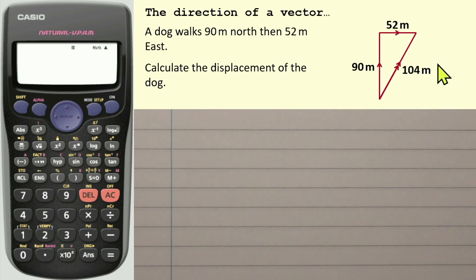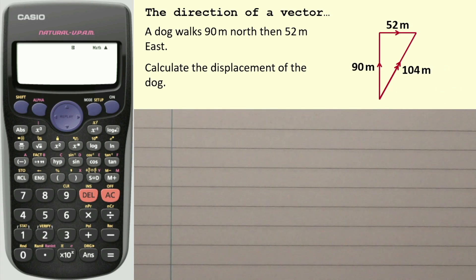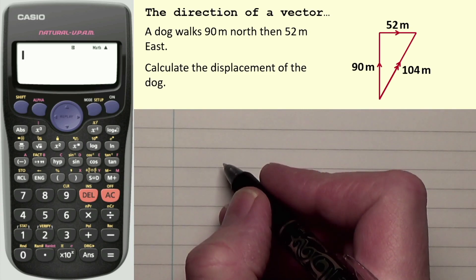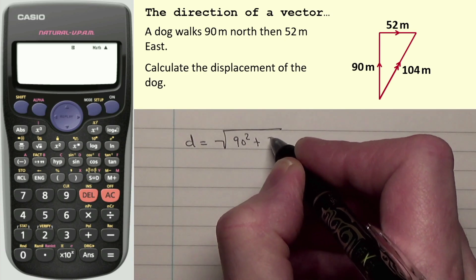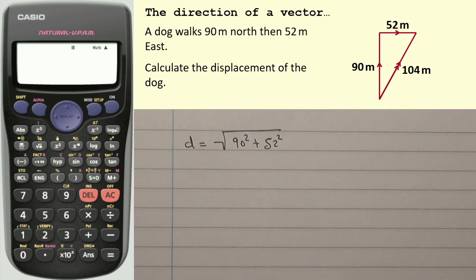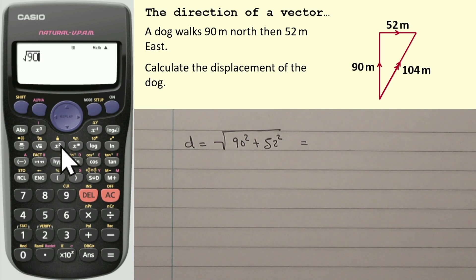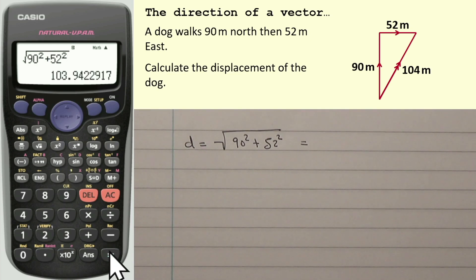You can also see that the resultant is 104 metres. How I work that out — and there are other videos on vector addition — is D equals the square root of 90 squared plus 52 squared. This is just a right-angled triangle and I'm using Pythagoras. Taking the square root of 90² + 52² gives 103.94, which rounds to 104 metres.